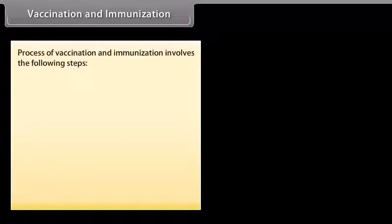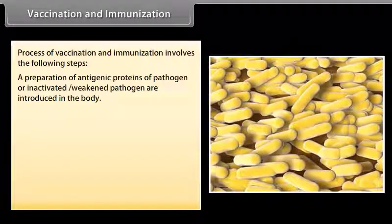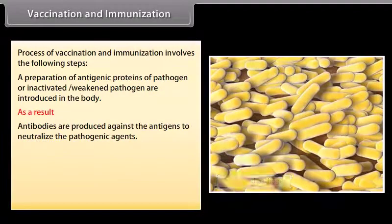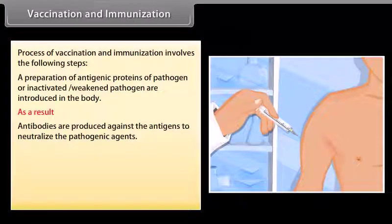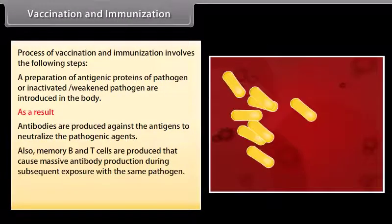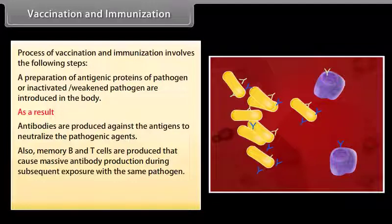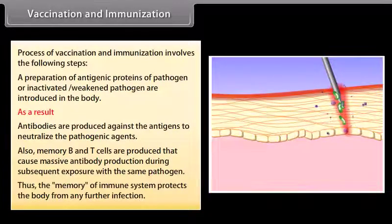The process of vaccination and immunization involves introducing a preparation of antigenic proteins of a pathogen, or an inactivated/weakened pathogen, into the body. As a result, antibodies are produced against the antigens to neutralize the pathogenic agents. Memory B and T cells are also produced, causing massive antibody production during subsequent exposure to the same pathogen, thus protecting the body from further infection.